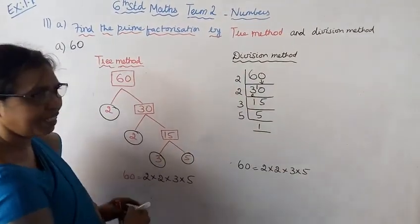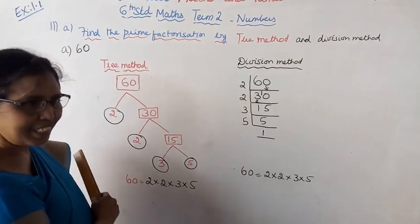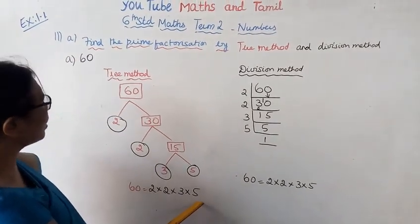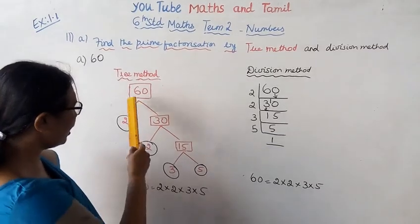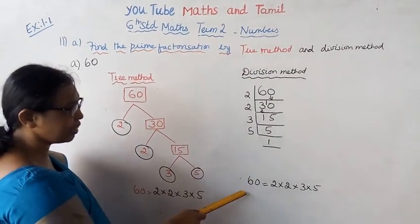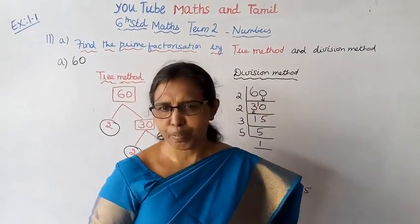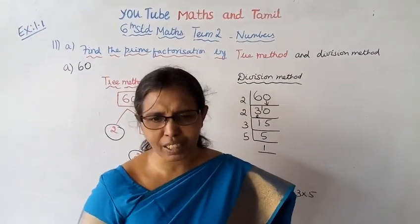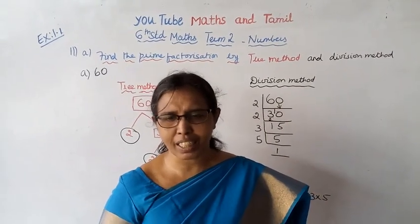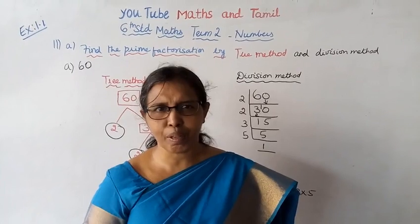The division method is easier. Find the prime factorization using the tree method. This channel helps you to get 100 marks. Subscribe and click the bell button.